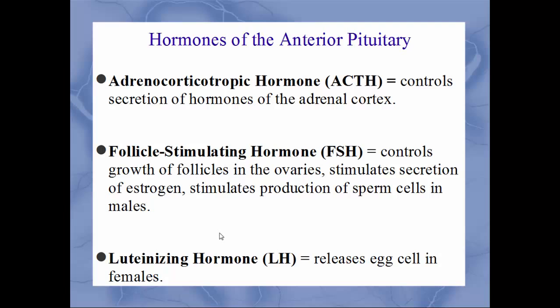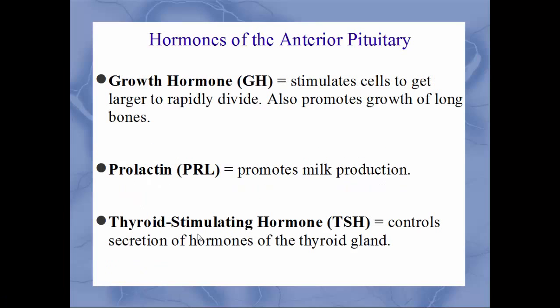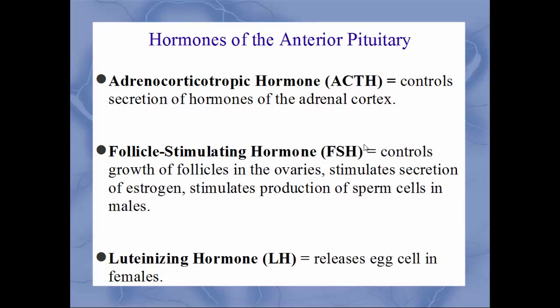Follicle stimulating hormone (FSH) controls the growth of follicles in the ovaries, stimulates estrogen secretion in females, and stimulates sperm production in males. Luteinizing hormone (LH) helps release the egg during ovulation in females. All six — GH, PRL, TSH, ACTH, FSH, LH — come from the anterior lobe. On a test, writing just 'pituitary gland' will be marked wrong; you must write 'anterior pituitary gland.'